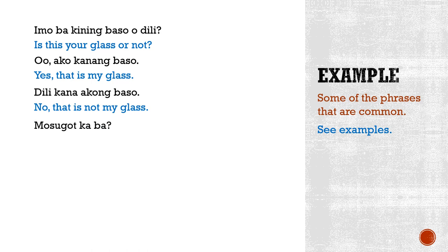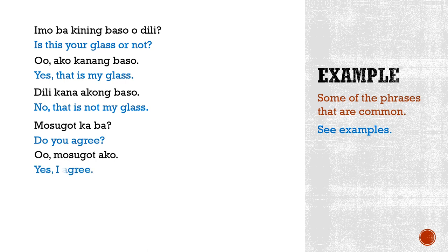Musugot ka ba? — Do you agree? Sugot is to agree. Oo, musugot ako — Yes, I agree. Dili akong musugot — No, I don't agree.